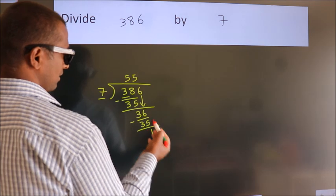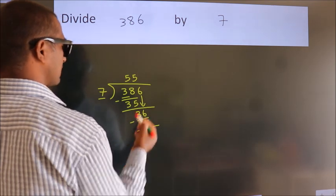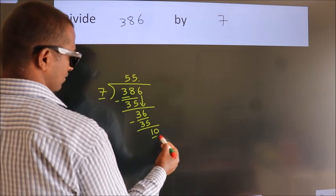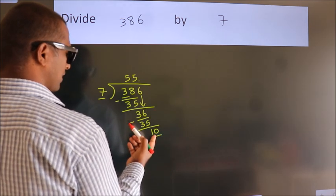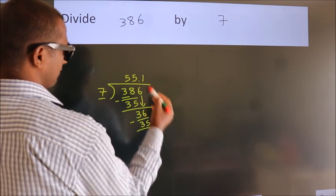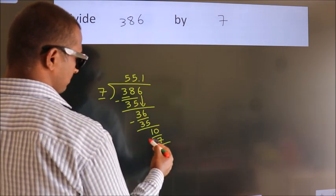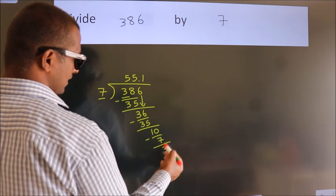After this, no more numbers to bring down. So what we do is, we put a dot and take 0. So, 10. A number close to 10 in the 7 table is 7 ones, 7. Now we subtract and get 3.